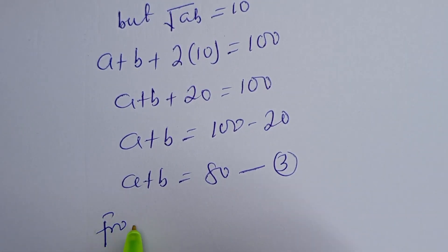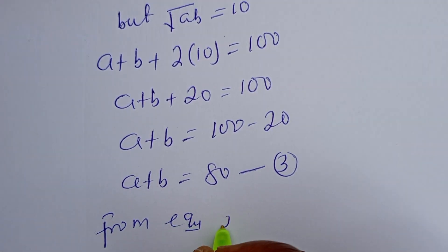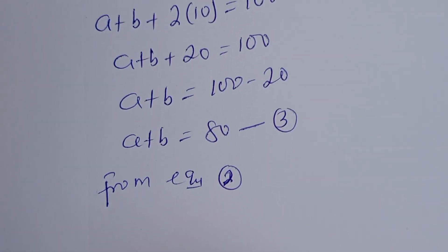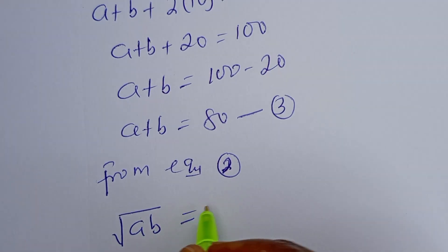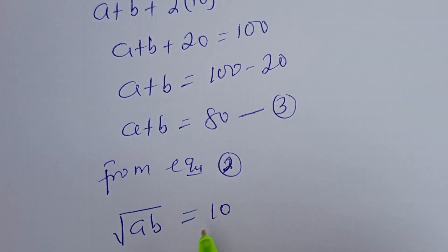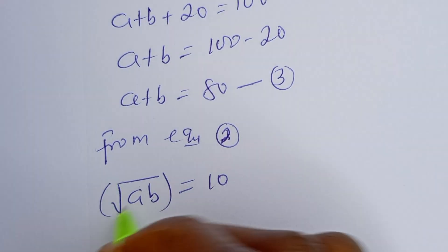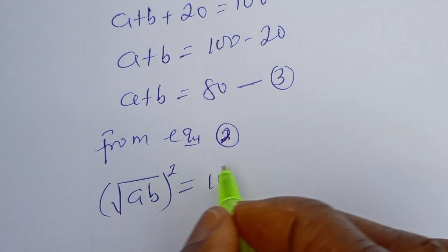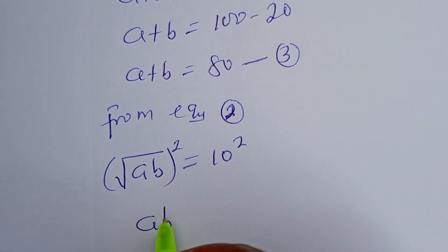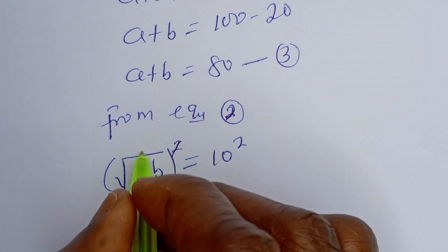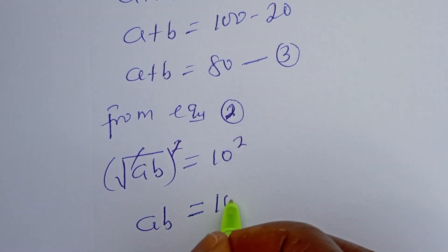Also, from equation 2, square root of AB is equal to 10. Let's square both sides of this equation. Then AB is equal to 100.